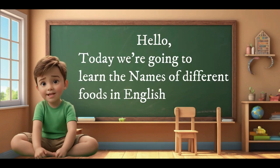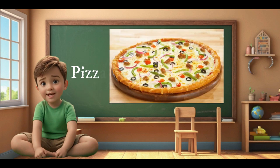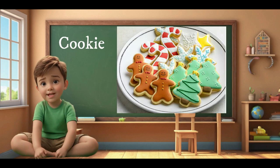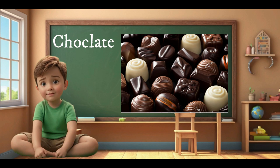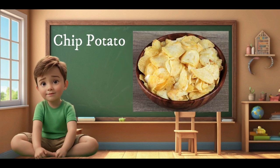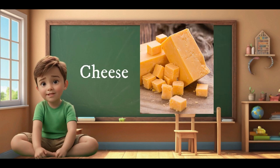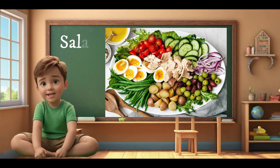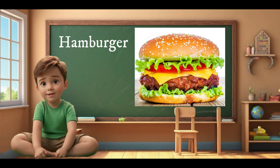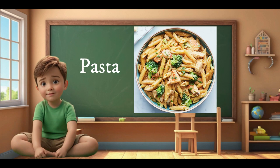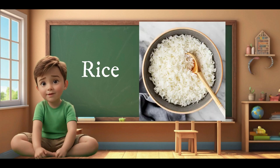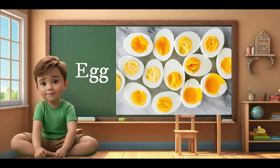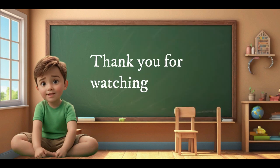Hello, today we're going to learn the names of different foods in English. Pizza. Cake. Candy. Cookie. Chocolate. Chip potato. Cheese. Yogurt. Bread. Salad. Hamburger. Sandwich. Pasta. Rice. Soup. Egg. Chicken. Thank you for watching the video.